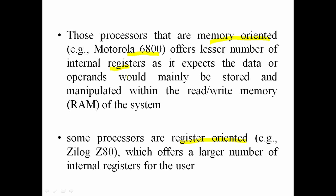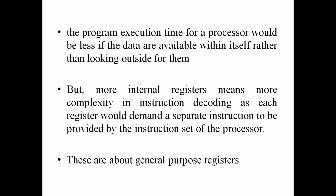In a memory-oriented processor, data is stored in read-write memory. In the case of a register-oriented processor, the processor will be faster when compared to memory-oriented, because the data is available inside the processor itself, reducing execution time. Fetching from external memory outside the processor takes additional time.